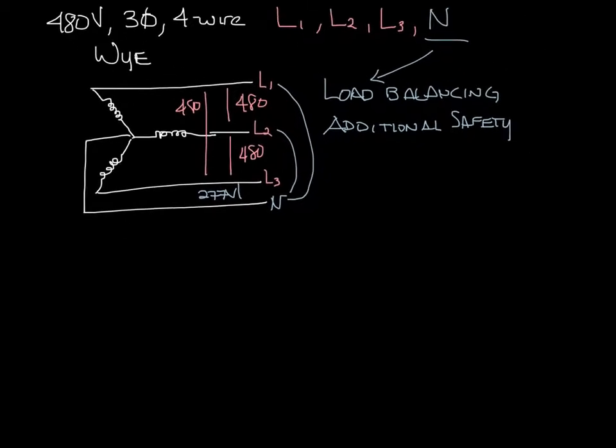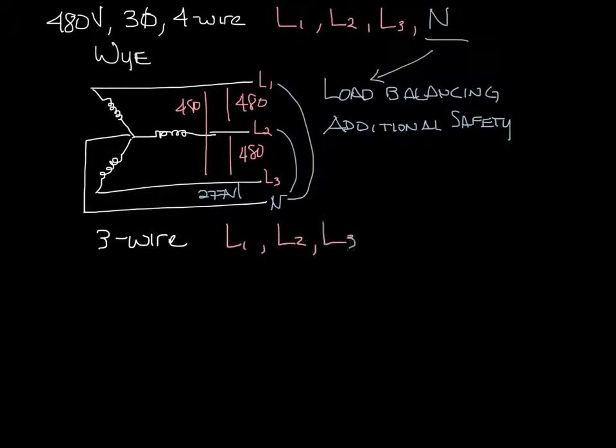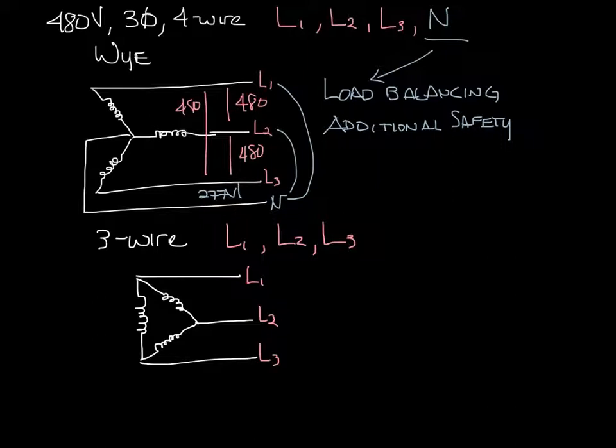Okay, so let's make a little room so I can talk about the Delta configuration. So with the 3-wire Delta, you have L1, L2, and L3, but no neutral. And it looks like this. It is in the shape of Delta, a triangle. And you have L1, L2, and L3 here. With the 3-wire Delta, you can only get full voltage, or in this case, 480 volts.